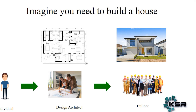The builders will follow this design architect's plan exactly. Whatever plan the design architect has given, the builders go and build precisely that. The design architect specifies what type of materials to use, dimensions, and how to manage scenarios like rain or flood — what should be the roof. Every single detail is defined by the design architect, and the builders execute it.